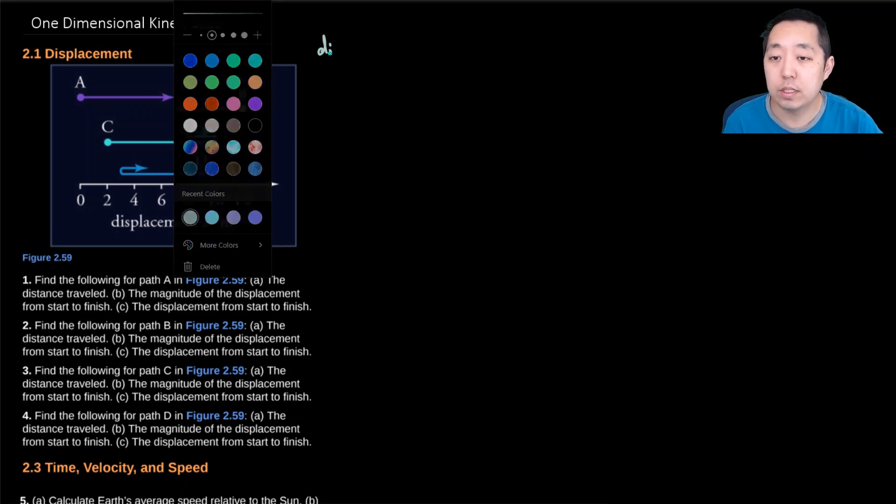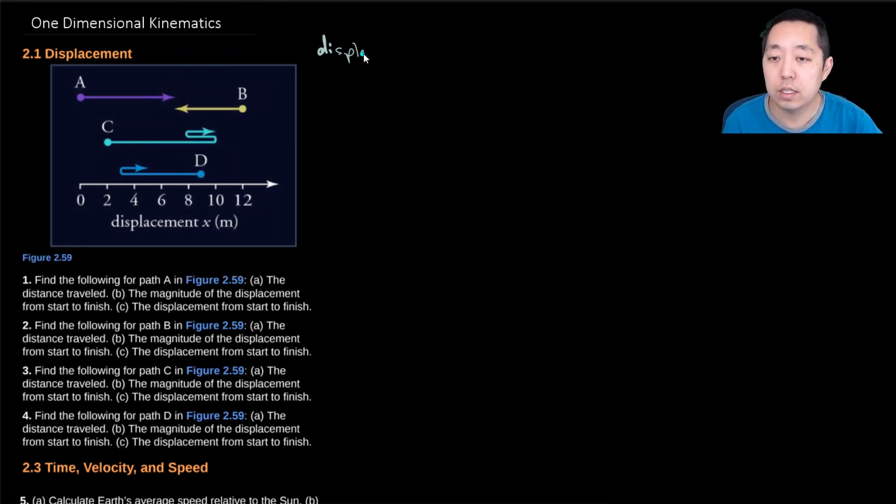Displacement is the change in position. We usually use delta x and it's the final position minus the initial position. The magnitude of displacement would just be the absolute value of delta x, the absolute value of the final position minus the initial position. And then last we have distance traveled. Distance traveled is sort of adding up all the positive distance travels.